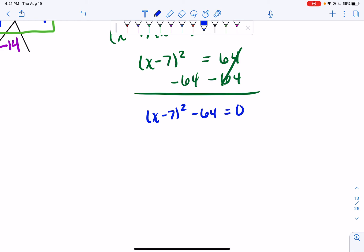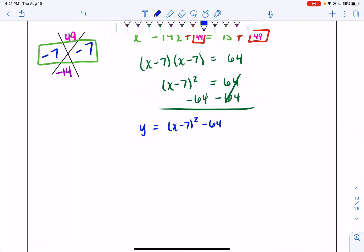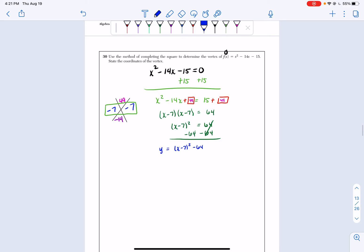But if you wanted to, instead of writing equal to 0, you can replace this and just say y equals x minus 7 squared minus 64. Now that we have our equation written in completing the square or vertex form, we can look at this and say what our vertex is.